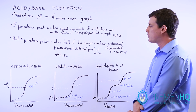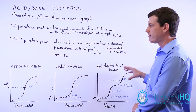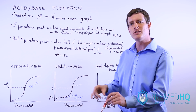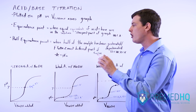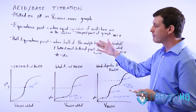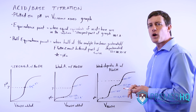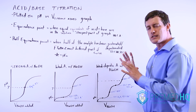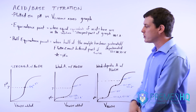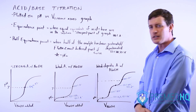So those are the two important points you look for on a titration graph: the equivalence point, which is the steepest point where you've added enough base equivalents to take all of the protons that the acid could offer; and the half equivalence point, which is the flattest, most buffered point where half of the acid is still protonated and half is deprotonated. We'll now go through each of these individual graphs and analyze them.